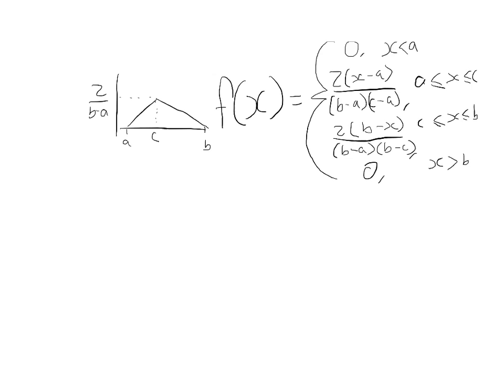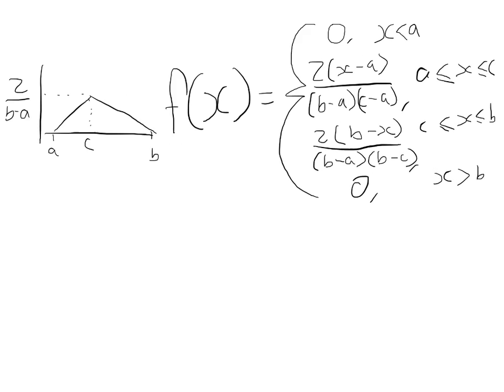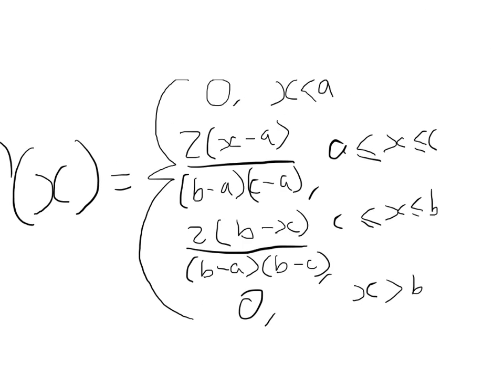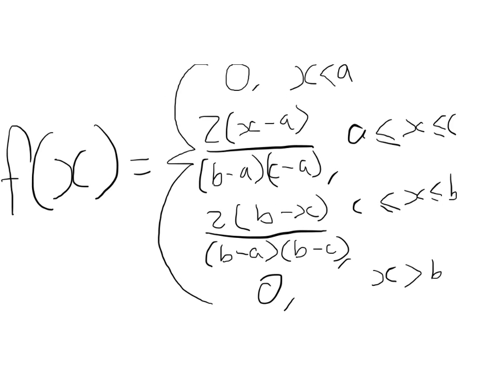This is a short video going through how to work out the probability using a triangularly distributed random variable. We have the formula here which, as you can see, is quite complex, but it's not as bad as it looks once we get into it. I apologize about my writing — it's really not easy to write on this.